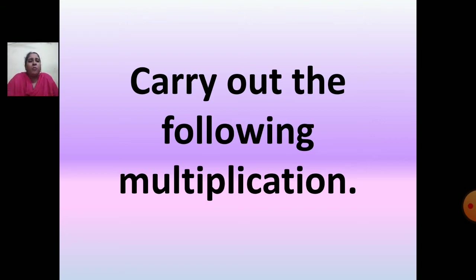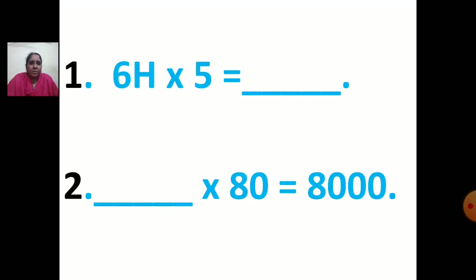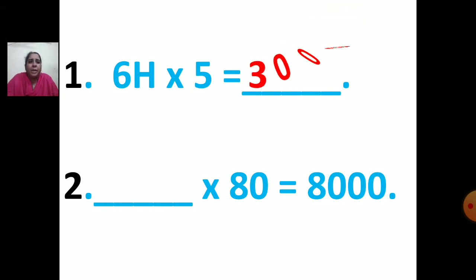So, carry out the following multiplication. First question: 6H multiplied by 5 equals dash. So how are you going to do this sum? 6H multiplied by 5 — first you will multiply 6 by 5. 6 fives are 30. And H means 100, so how many zeros are in 100? 2 zeros. So your answer will be 3000. First you multiply 6 by 5 to get 30, and then you put 2 zeros for 100.